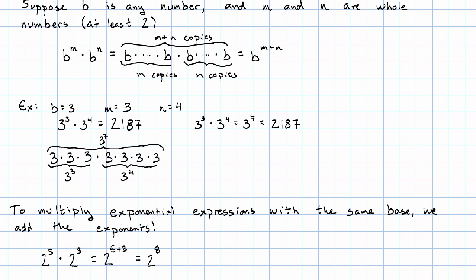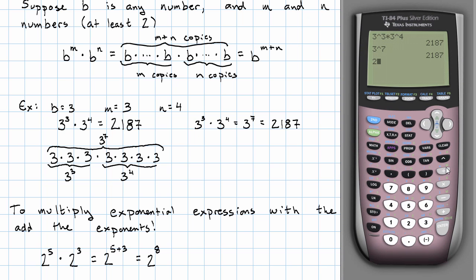Let's make sure that that works. 2 to the 5th times 2 to the 3rd is 256. 2 to the 8th, also 256. It really does work.